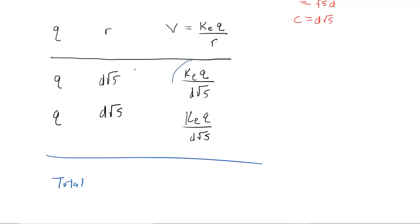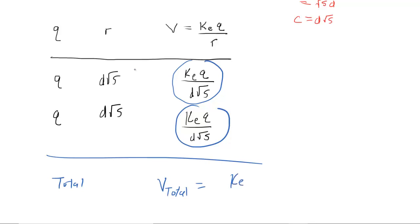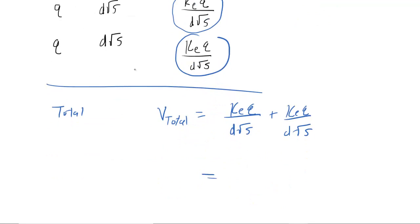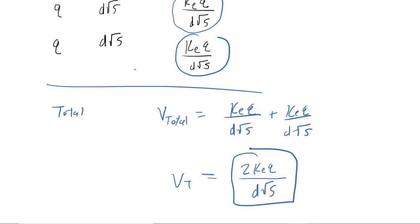We add the electric potential of the first charge to the electric potential of the other charge. The total electric potential equals K_E times Q over D√5 plus another K_E times Q over D√5. Since the denominators are the same we can add the numerators, giving us 2K_E Q over D√5. This is the total electric potential at that location — the correct answer to part A.